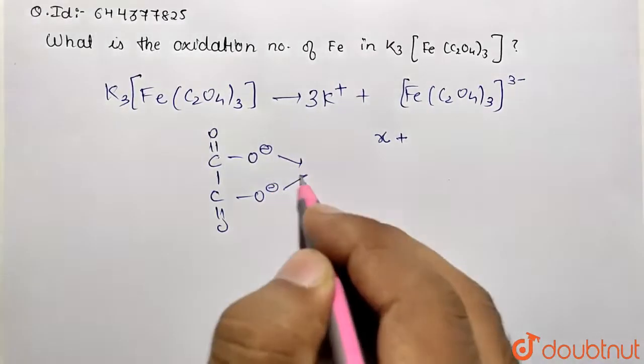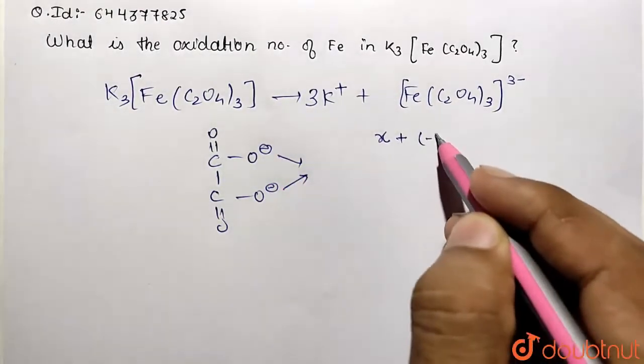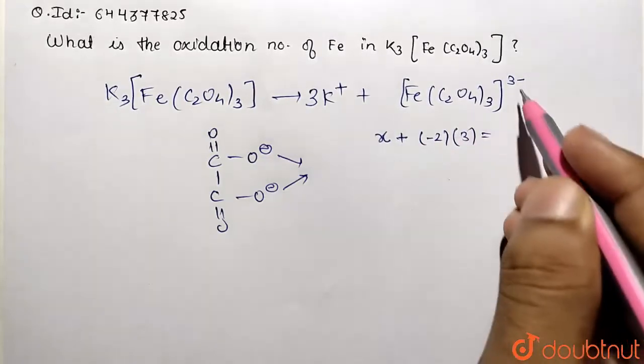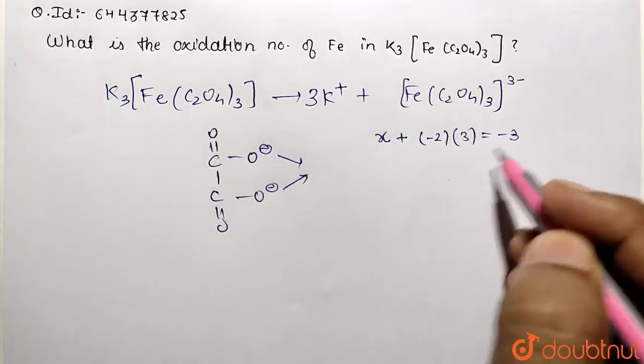So over here I multiplied minus two by the number of ligands, that is three. This will be equivalent to the coordination charge, which is given as minus three. So after solving, minus six goes to that side, so it will be positive three.